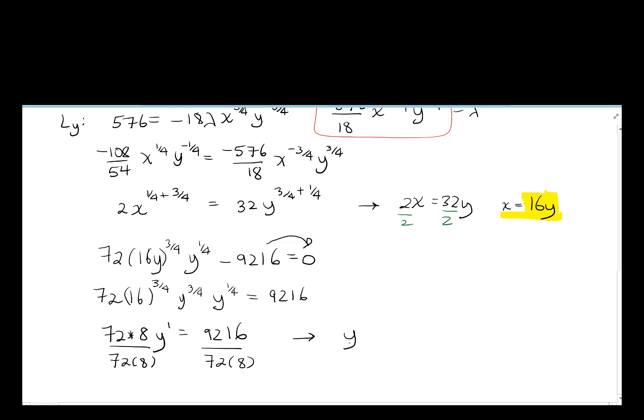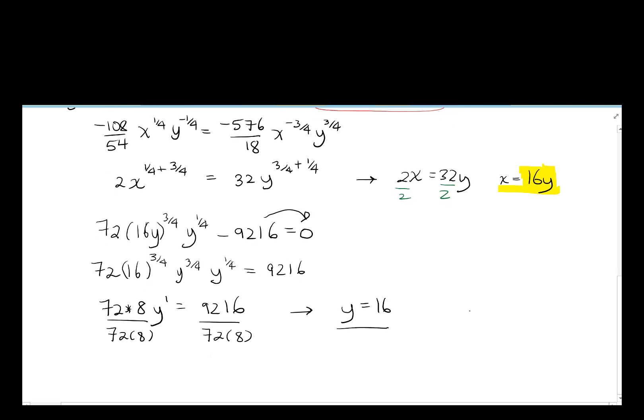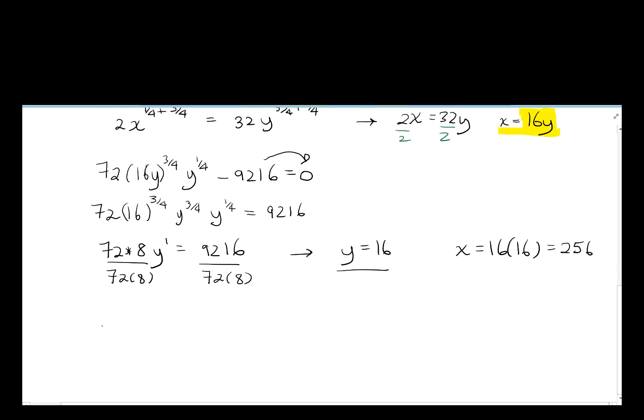And 9216 divided by 72 and then divided by 8 is 16. So y equals 16 is one of our answers. And then x is 16 times y, which is also 16, so it is 256. We minimize the total cost when x equals 256 and y equals 16.